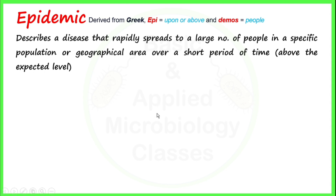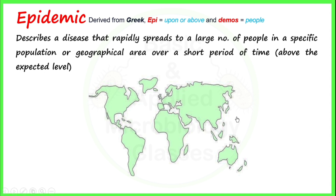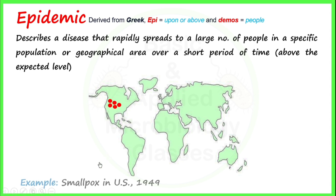Let's try to understand epidemic with the help of this picture. This picture is showing us the outbreak of a disease in a specific geographical area. In a very short period of time, the number of cases of this type of disease increase over that area. For an example, in 1949 there occurred a smallpox outbreak in the US, which represented an epidemic.